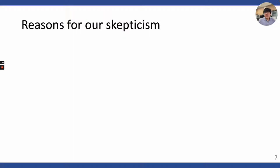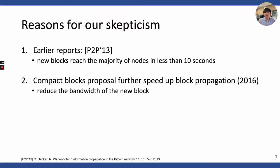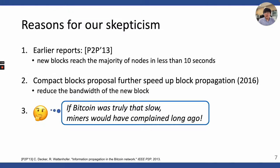We were quite skeptical about this claim, and there are good reasons for our skepticism. First, an earlier report on block propagation speed in 2013 shows that block propagation used to take only about 10 seconds. Second, the compact block technique was introduced to Bitcoin in 2016 and further improved propagation speed. Last, considering the Bitcoin ecosystem, if Bitcoin were really that slow, miners would have complained about it already — but we haven't heard any such complaints. To that end, we decided to conduct our own measurements on Bitcoin's block propagation.